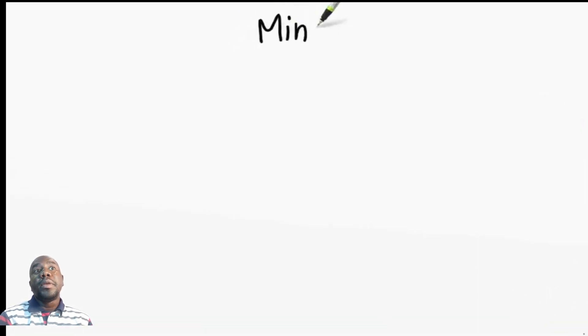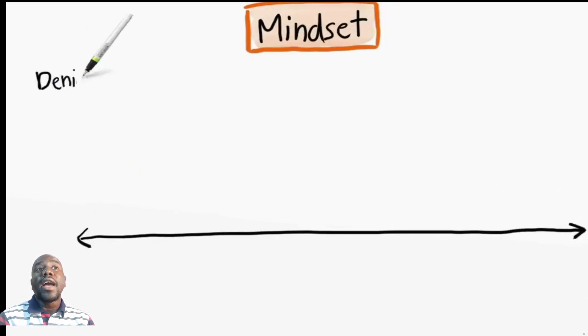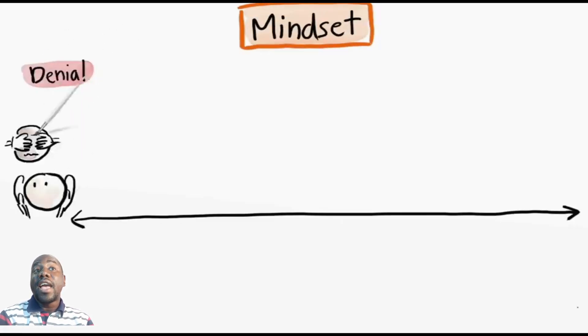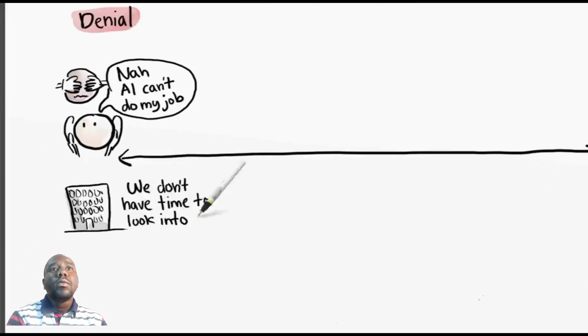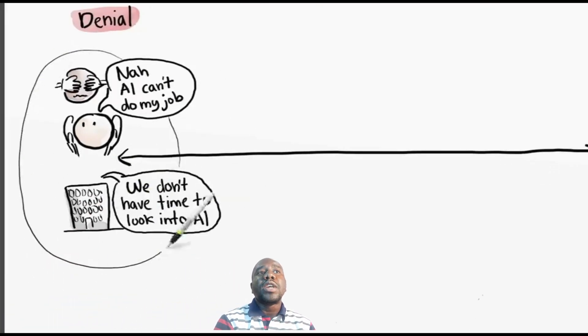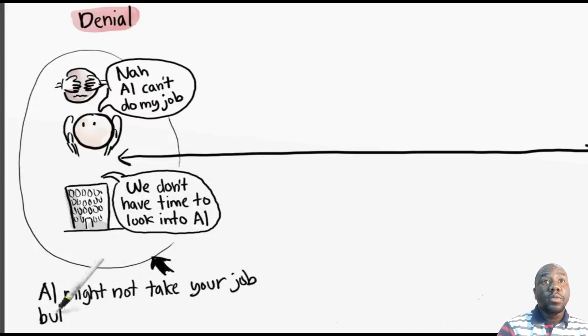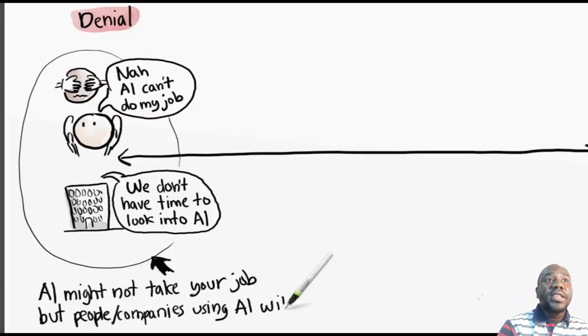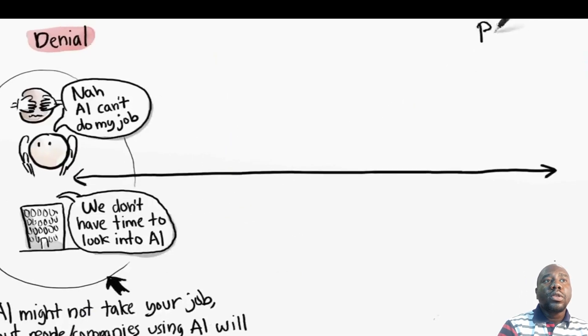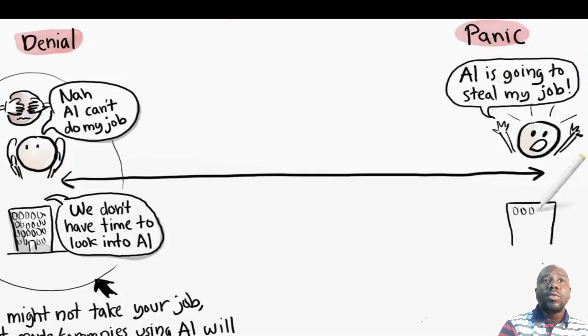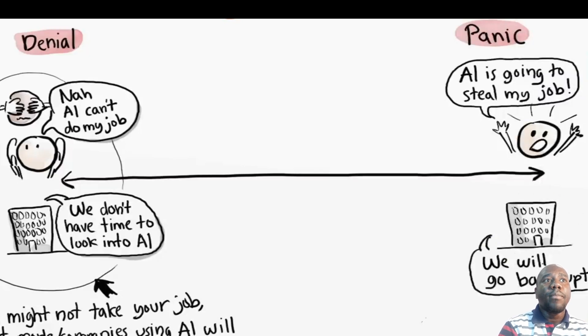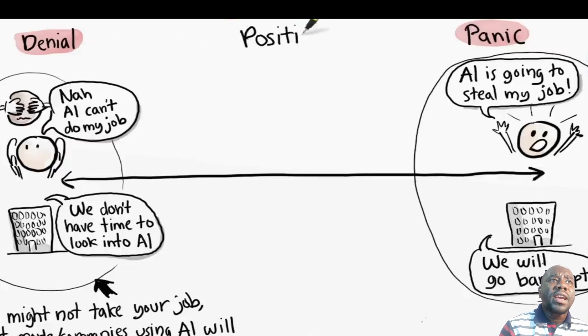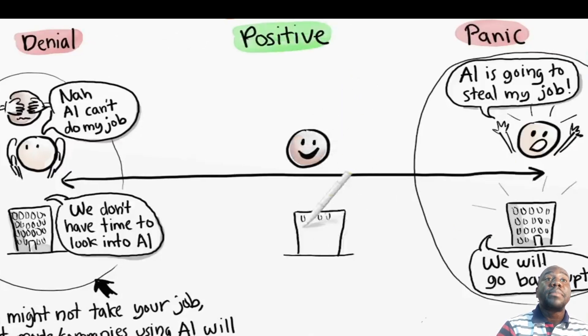I've noticed that people and companies tend to fall into different mindsets when it comes to AI. On one side, we have denial. They believe that AI cannot do my job or we don't have time to look into this technology. This is a dangerous place to be. A common saying is that AI might not take your job, but people using AI will. This is true for both individuals and companies. On the other hand, we have panic and despair. They believe that AI is going to take my job no matter what, AI is going to make my company go bankrupt. Neither of these mindsets are useful.